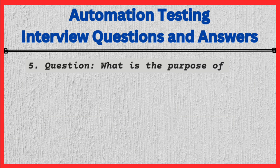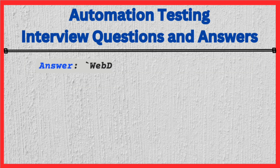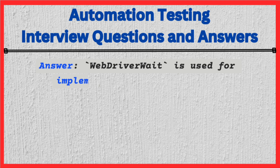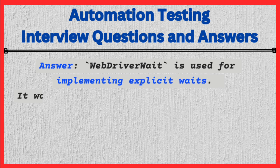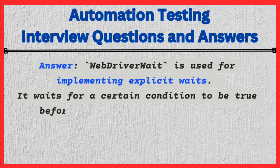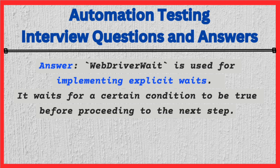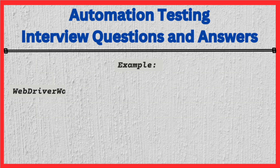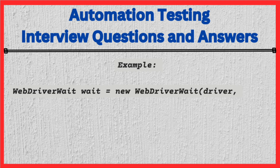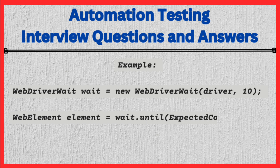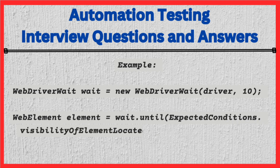Question: What is the purpose of the WebDriverWait class? Answer: WebDriverWait is used for implementing explicit waits. It waits for a certain condition to be true before proceeding to the next step. Example: WebDriverWait wait = new WebDriverWait(driver, 10); WebElement element = wait.until(ExpectedConditions.visibilityOfElementLocated(By.id("elementId")));